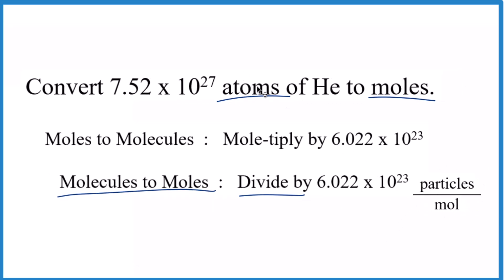In this case, the particles are atoms. So all we need to do is divide 7.52 times 10 to the 27th atoms of helium by Avogadro's number, and that'll give us moles. Let's do that.